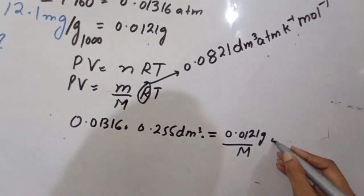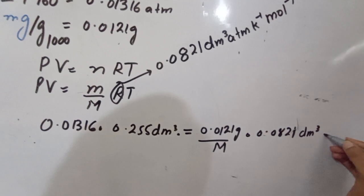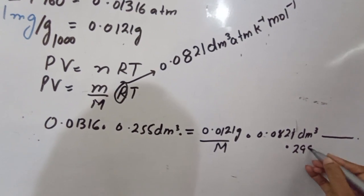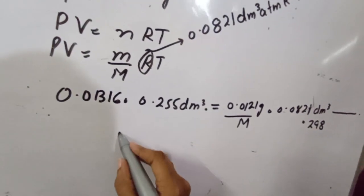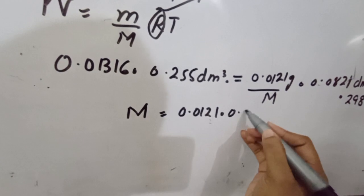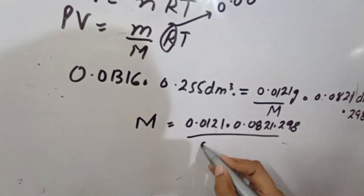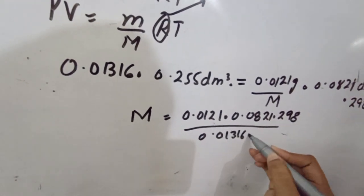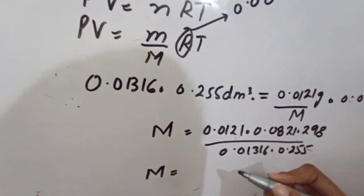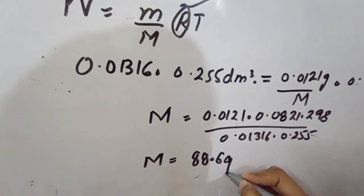R value is 0.0821 decimeter cube atm per mol per Kelvin, multiplied by 298 Kelvin, divided by 0.01316 times 0.255. The answer for molar mass is 88.6 gram per mol.